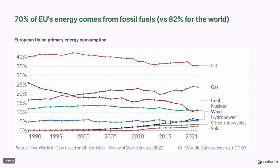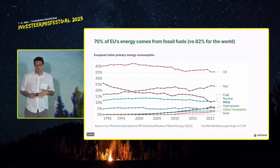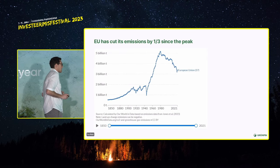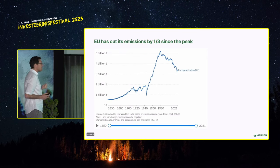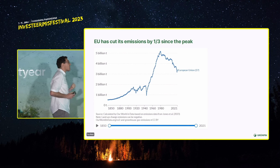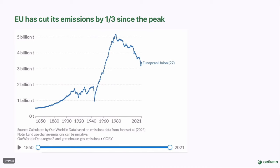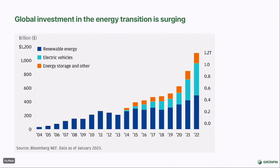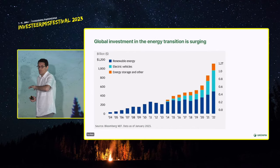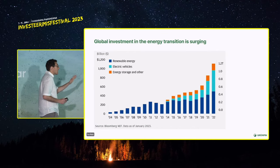Europe is way ahead of the rest of the world. In Europe, 70% of our energy comes from fossil fuels; the rest of the world, 82%. But I'm optimistic. The EU has already cut its emissions by a third since they peaked in the 70s and 80s — a lot of you weren't even born back then. We've already gotten a third of the way, and we can go another third and another third. There are literally trillions of euros going into the energy transition — last year we had 1.2 trillion, essentially doubled since 2019.